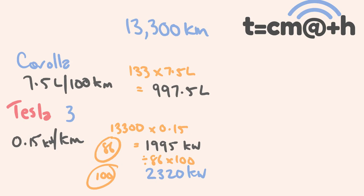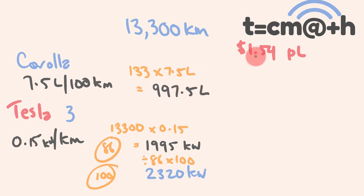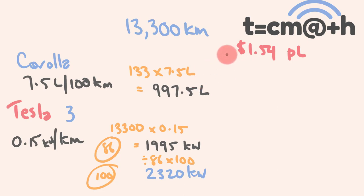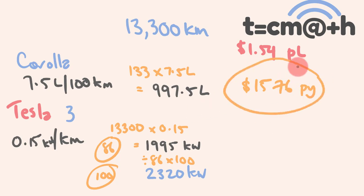Now how do we work out the cost? We need the price of petrol in Australia, which is highly variable depending on the day, but it's $1.54 per litre. For every one of those 997.5 litres we're paying $1.54, so we multiply 997.5 by $1.54. That gives us $1,576 per year for the Corolla.